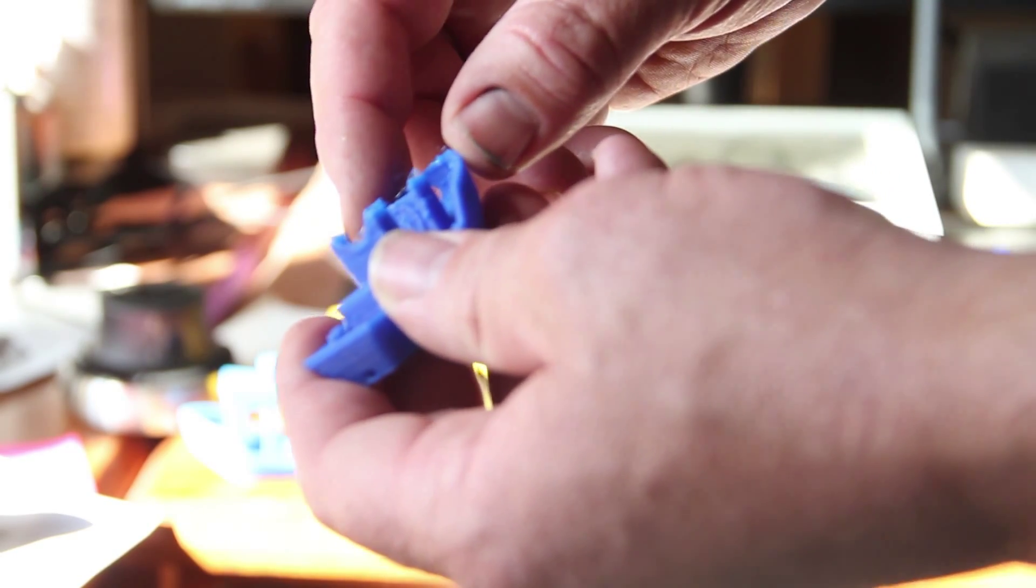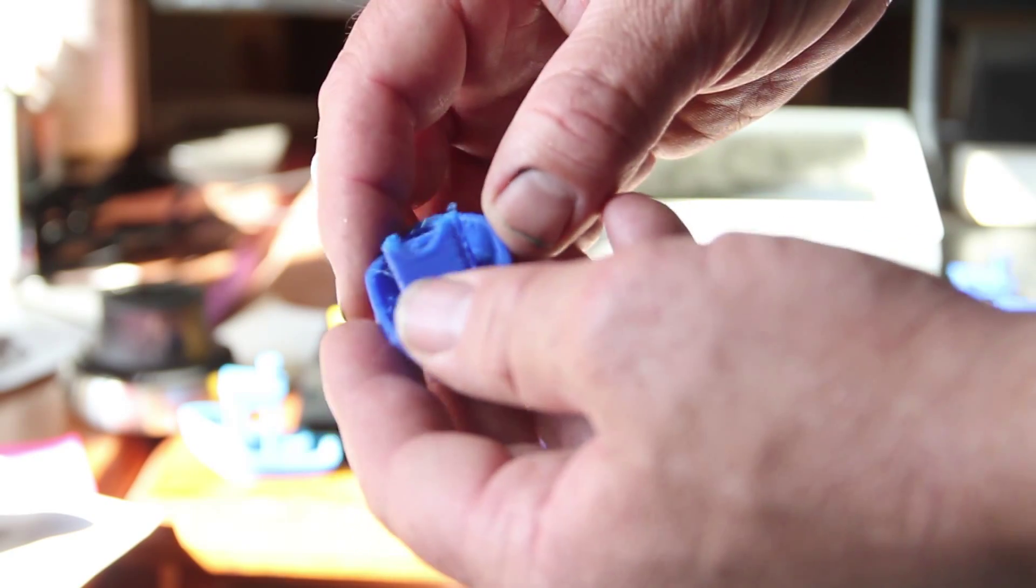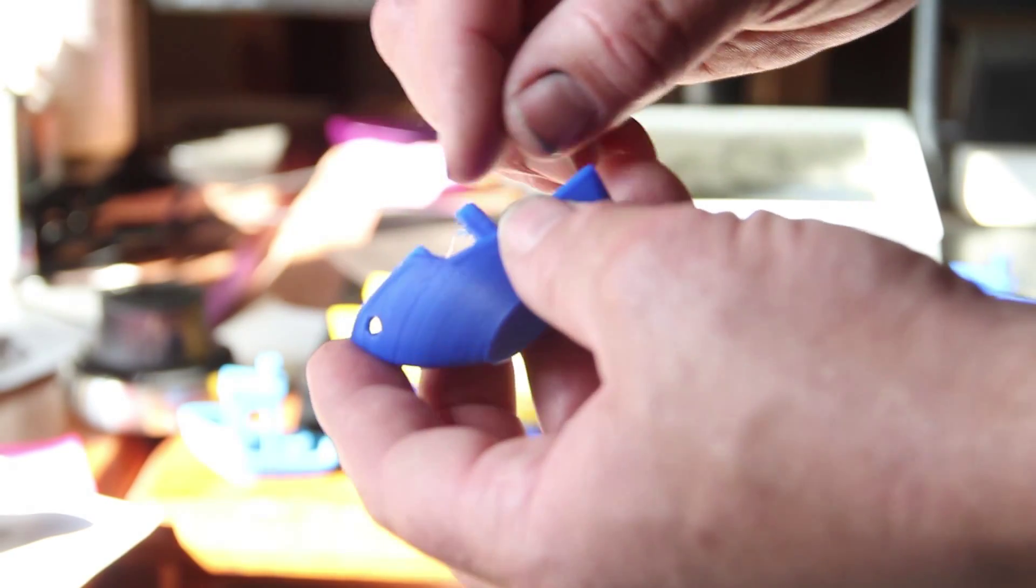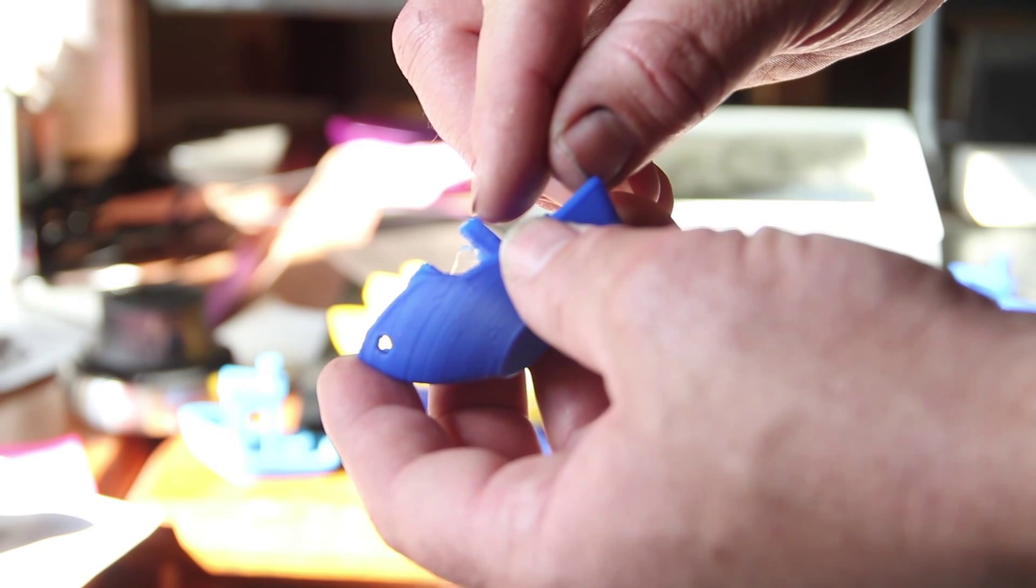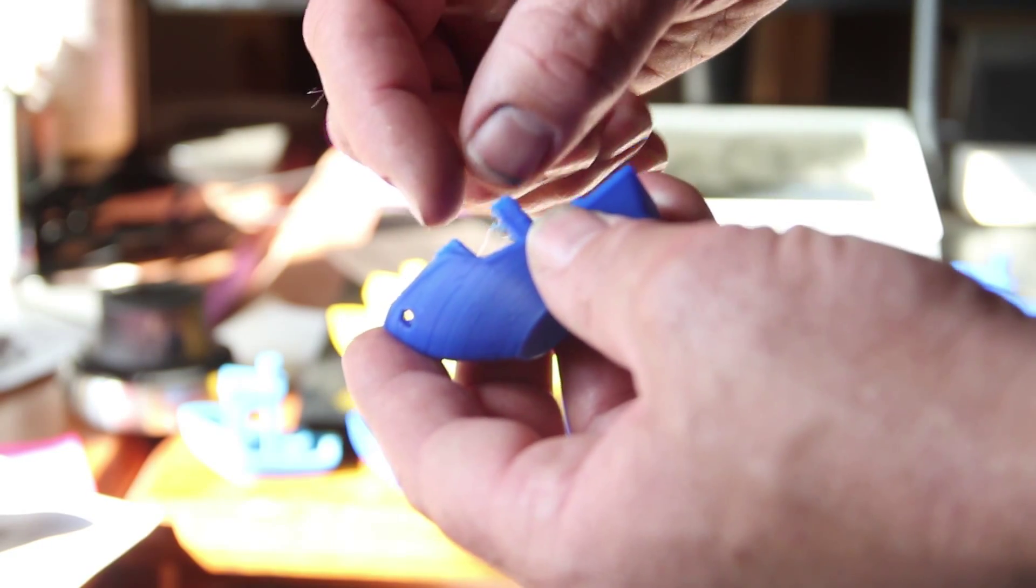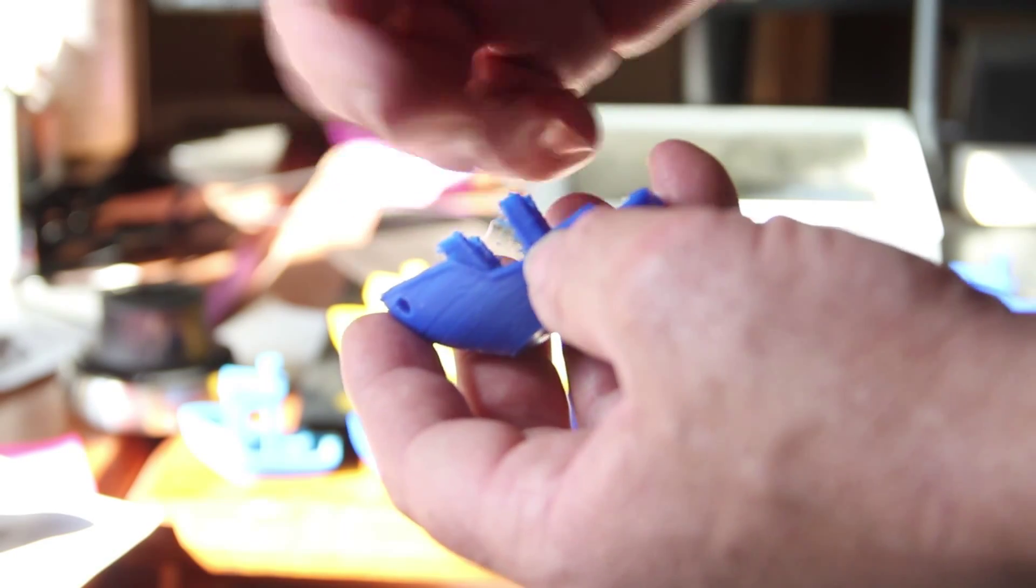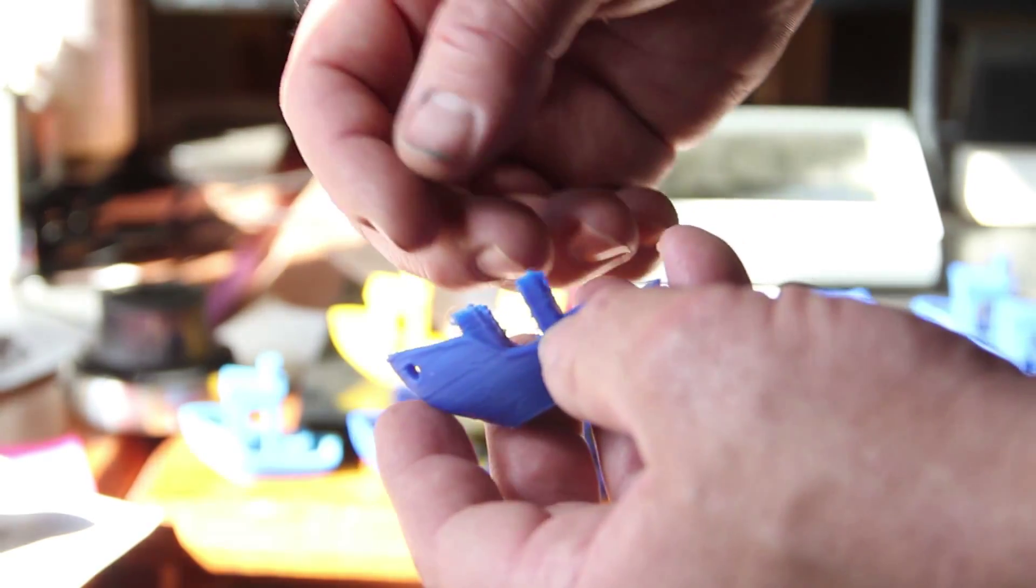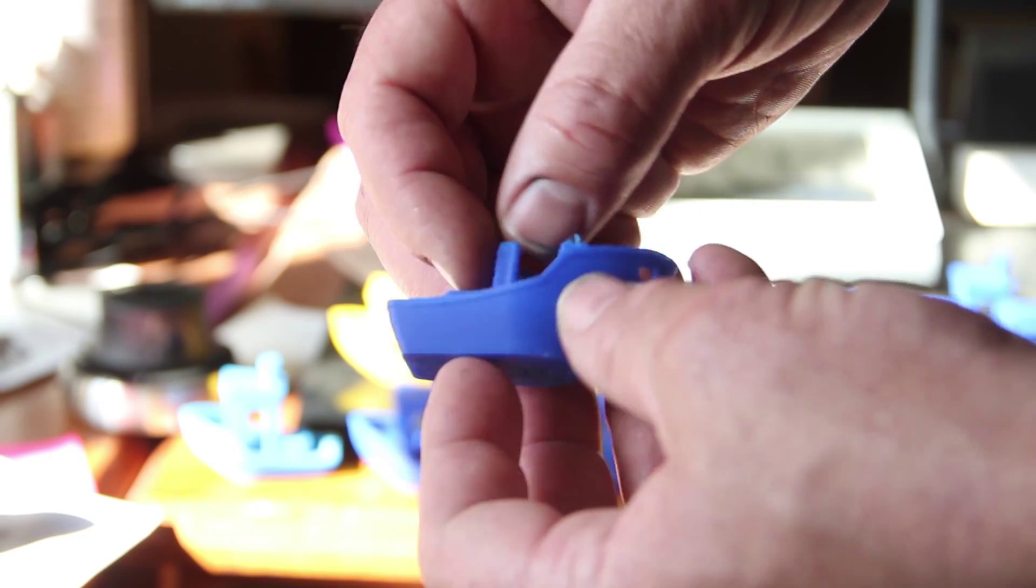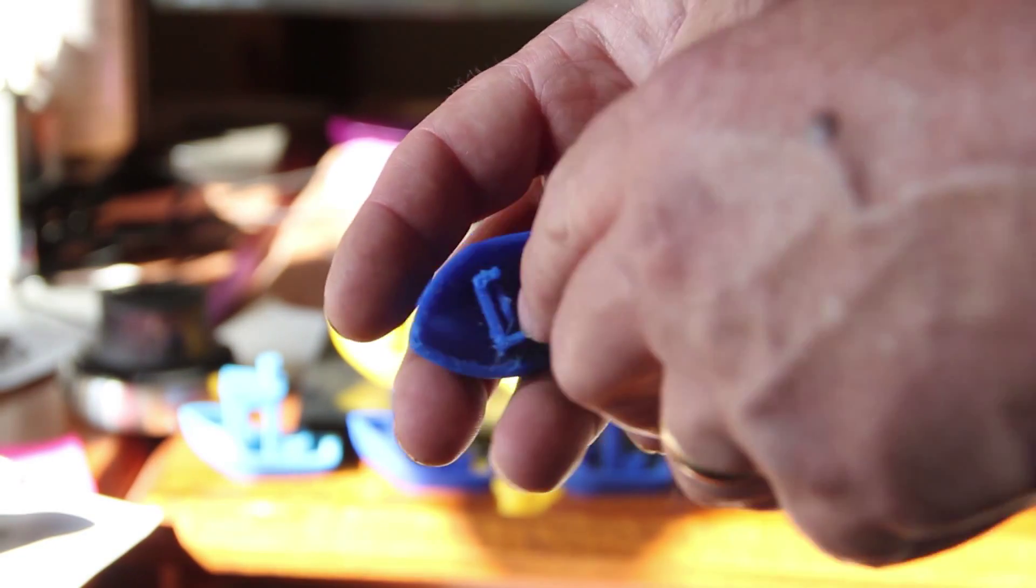But every time I got up to this point here, if I had any kind of retraction on that Bowden, it would back and forth enough when it got onto these pillars that it would flatten out the filament to the point where it wouldn't fit through the tubing anymore.